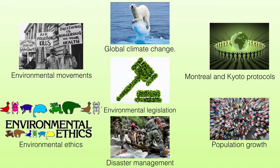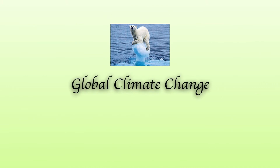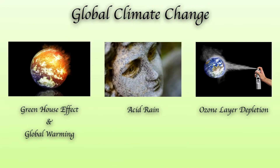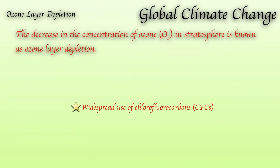The last topic is ozone layer depletion. The ozone layer is present in the stratosphere, where it helps protect us from the very dangerous UV rays coming from the Sun. The decrease in the concentration of ozone in the stratosphere is known as ozone layer depletion.